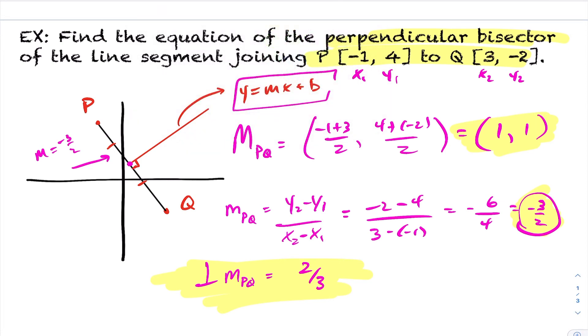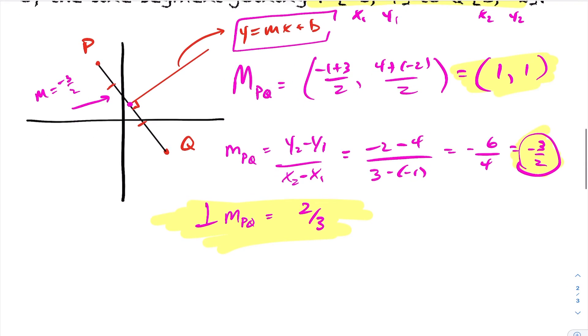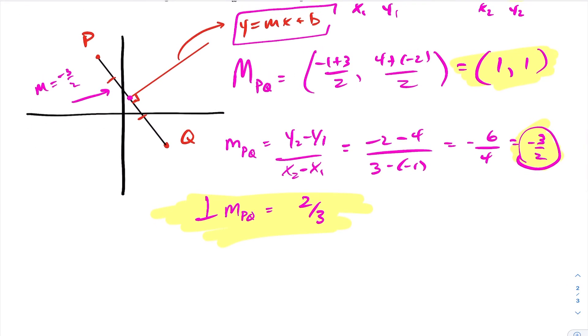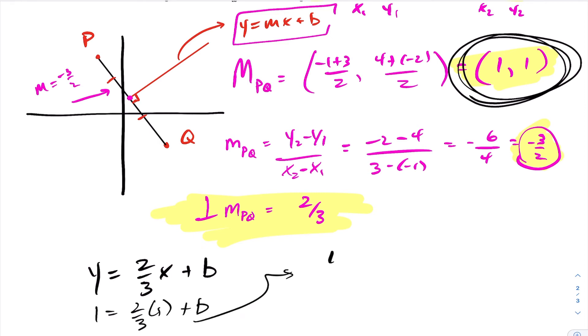So the equation of my line here, let's take a look here, you need a little bit more room. The equation of my line is going to be y equals, my slope is 2 thirds x plus, I don't know that b value, I want to find it. But I know that my line crosses through the point 1, 1. So I'm going to sub in 1, 1 into this equation.